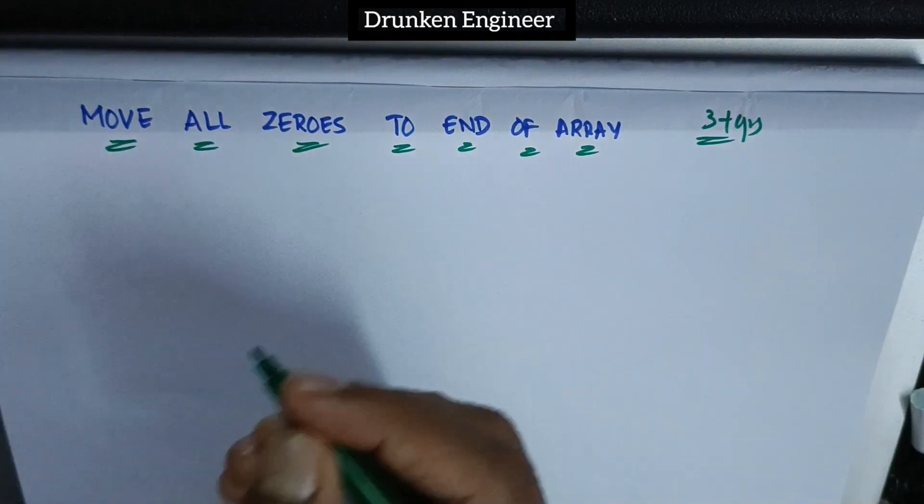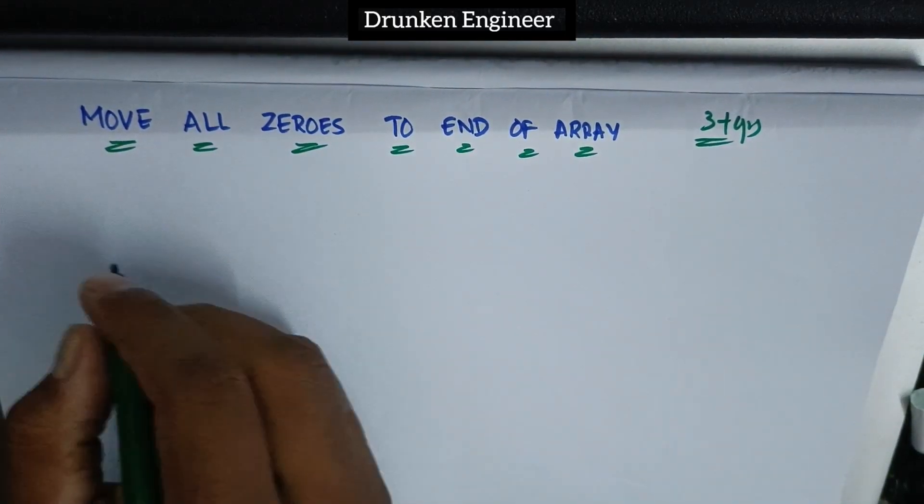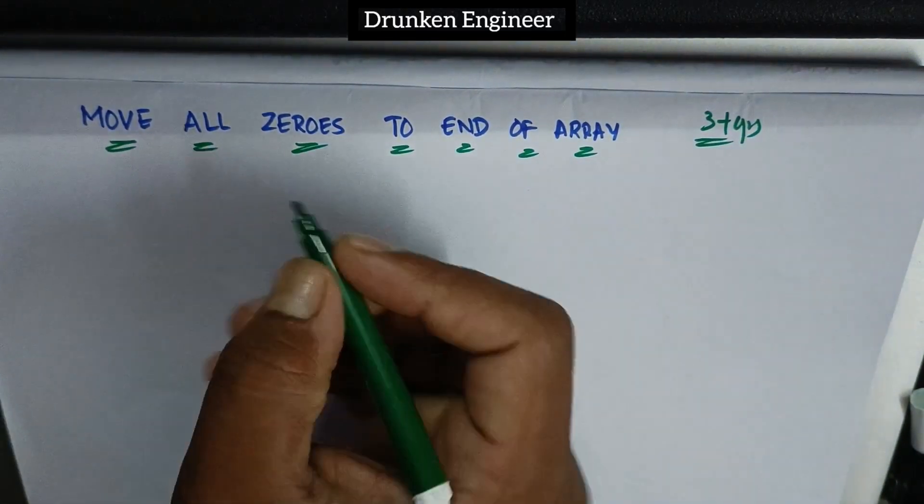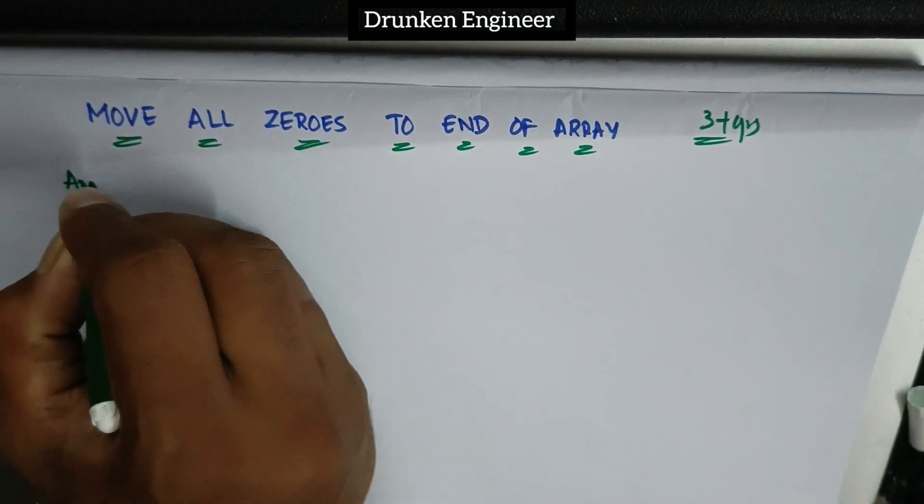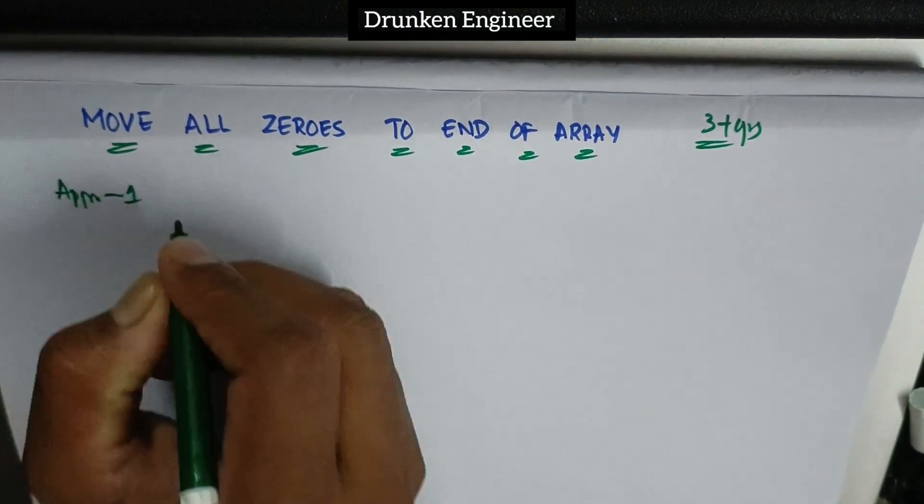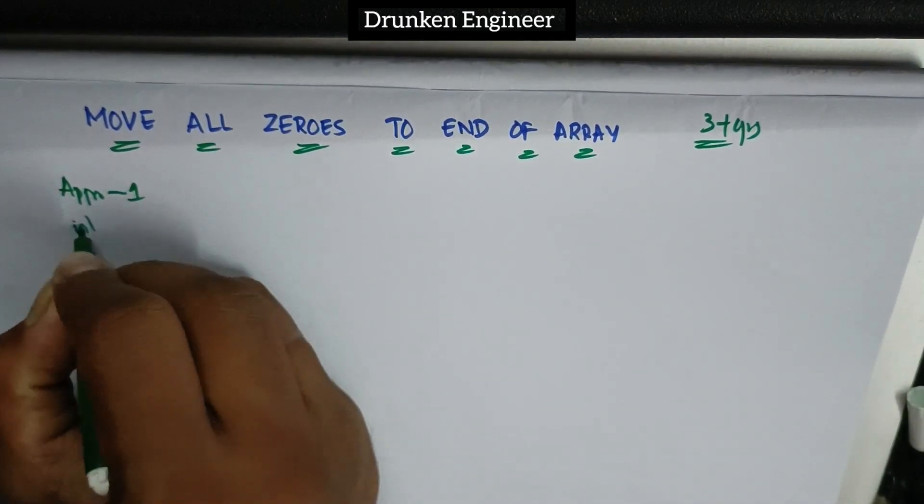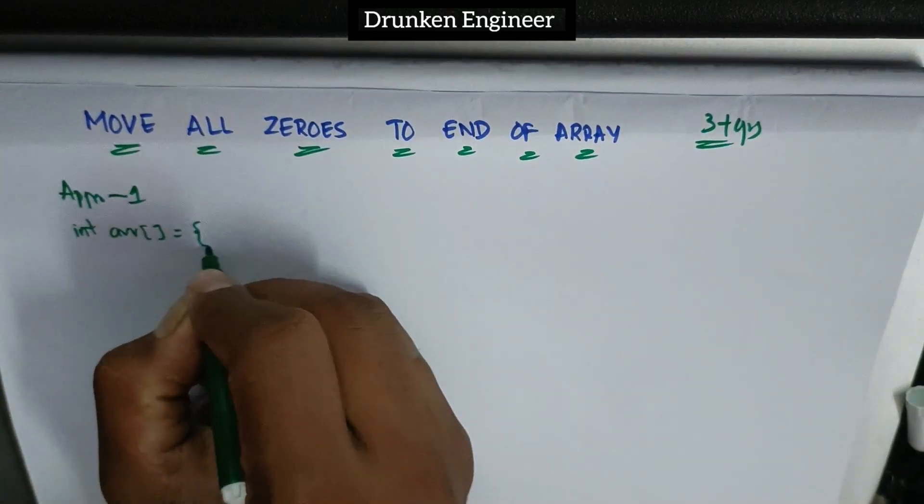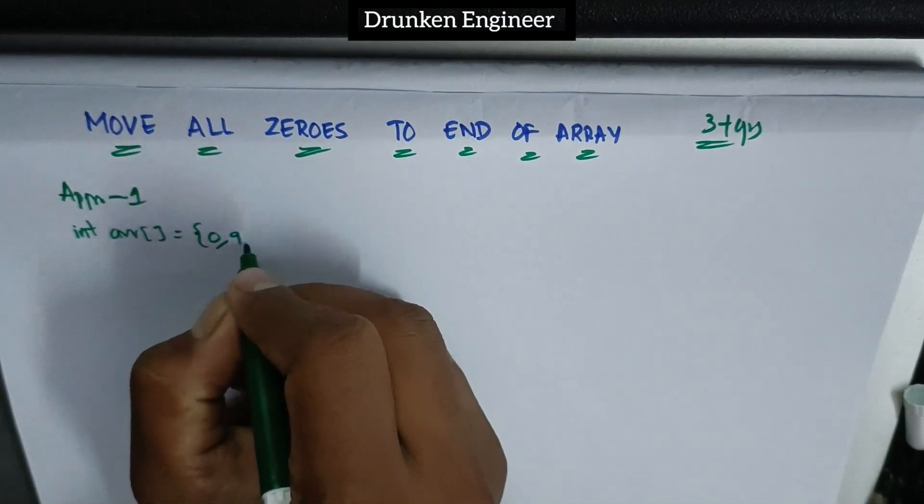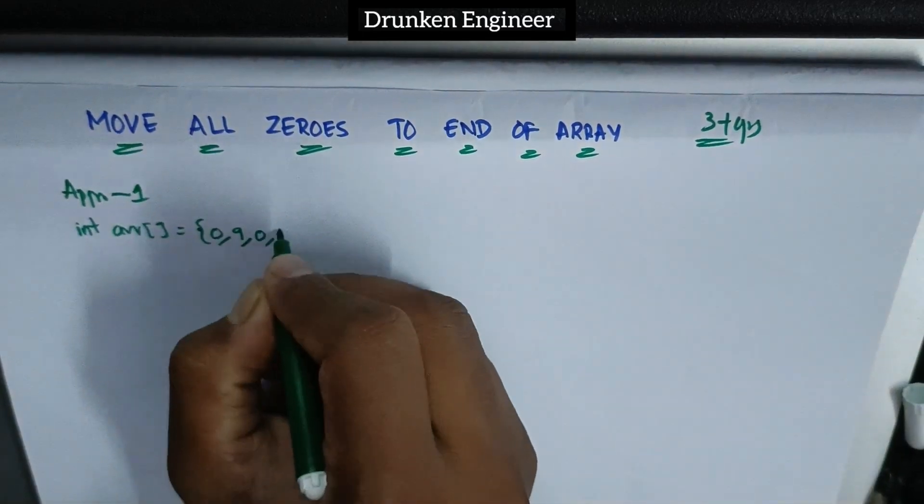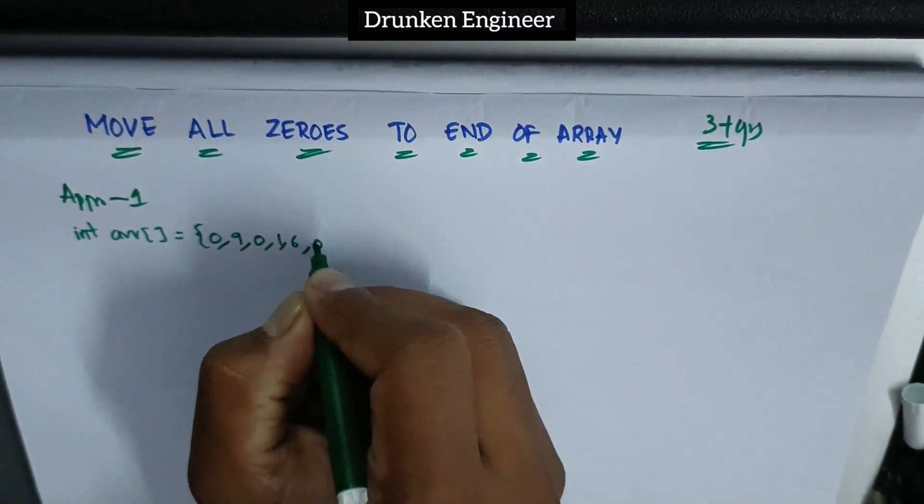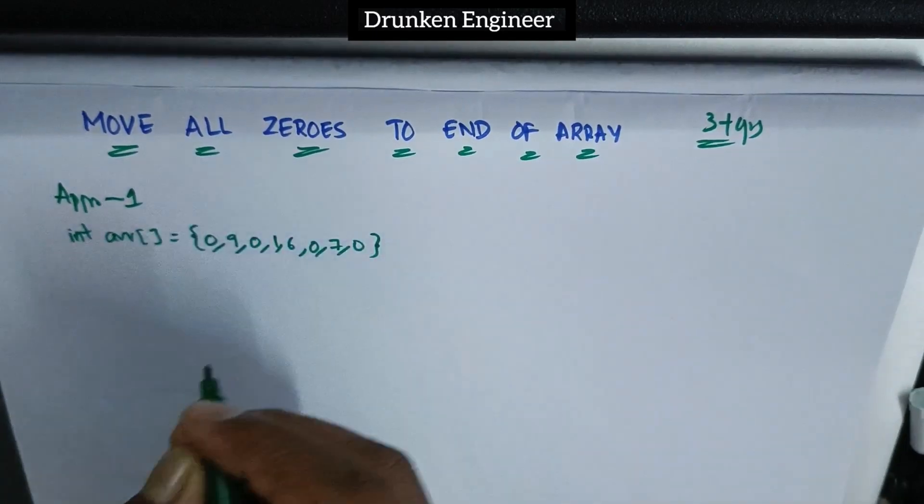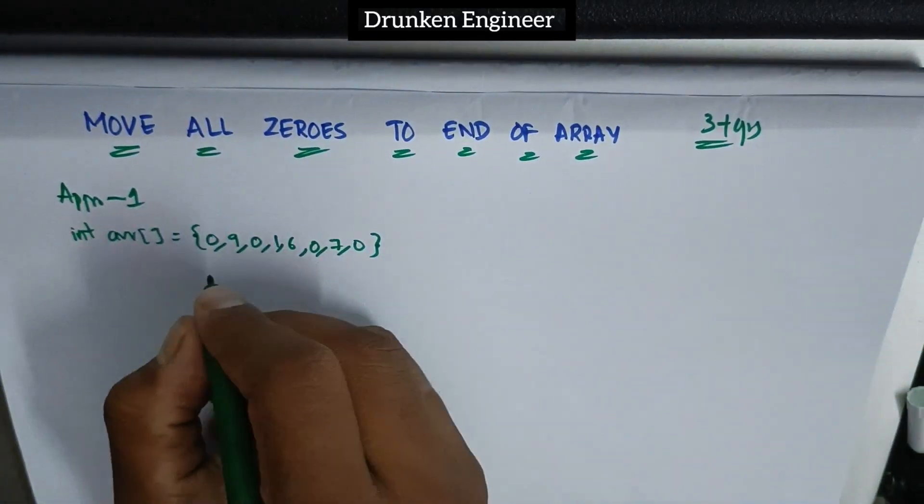I have two approaches. In the first approach, let me initialize an array. Consider this as an input: zero, nine, zero, one, six, zero, seven, and zero.